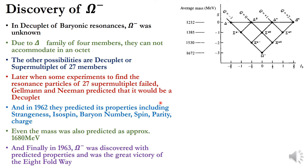In 1962, they predicted the properties of the Ω⁻, which was unknown at the time while all other particles in the decuplet were known. They predicted its strangeness, isospin, baryon number, spin, parity, and charge. Even the mass was predicted to be approximately 1680 MeV, since in each step of the decuplet the mass increases by approximately 150 MeV.